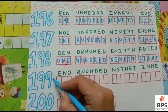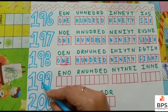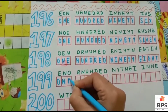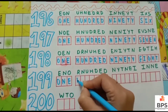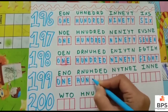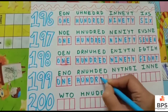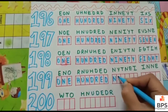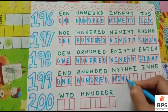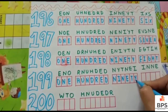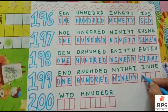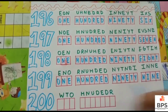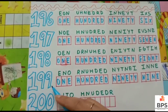199. O-N-E, 1, H-U-N-D-R-E-D, 100, N-I-N-E-T-Y, 90, N-I-N-E, 9. One hundred ninety-nine — 199.